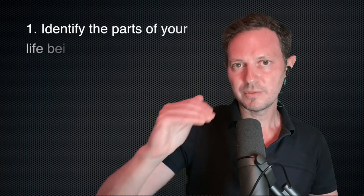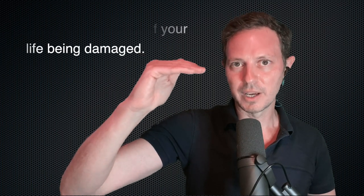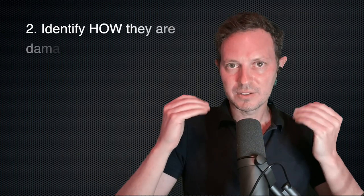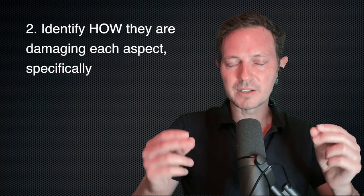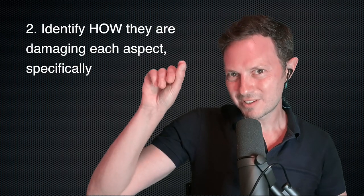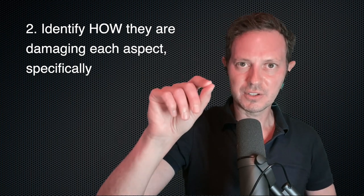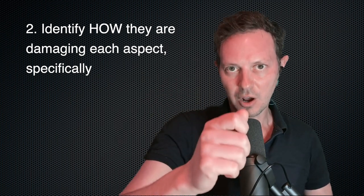These are the simple three steps. First of all, identify the different aspects of your life that you want to protect. Secondly, for each of these aspects, identify which specific behavior the narcissist undertakes that harms that part.